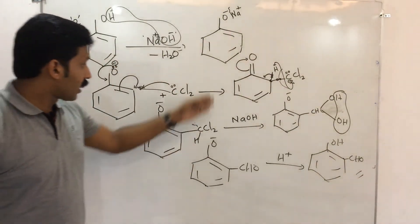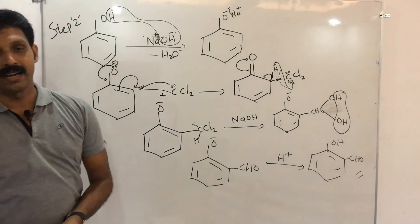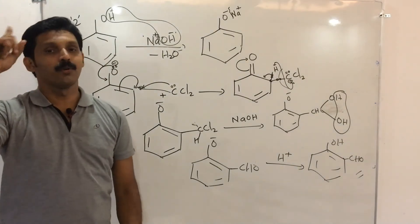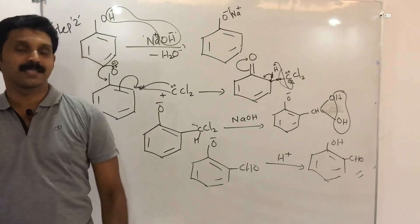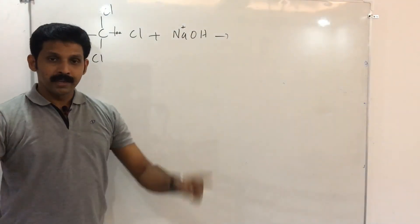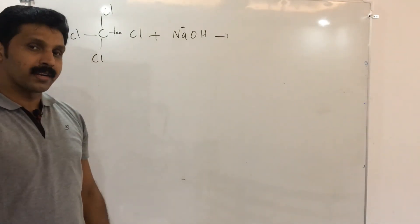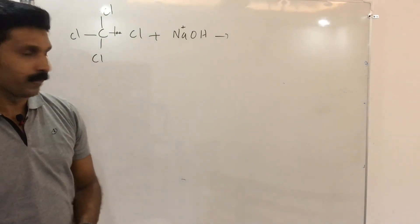This is the Reimer-Tiemann reaction mechanism — the mechanism of the Reimer-Tiemann reaction. The final product is salicylaldehyde — OH with a CHO group.